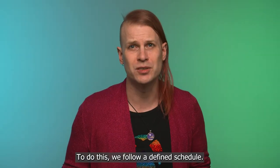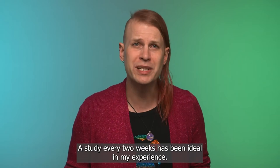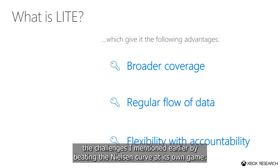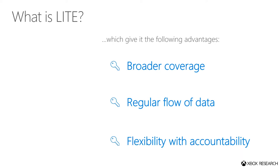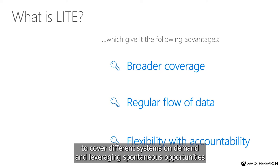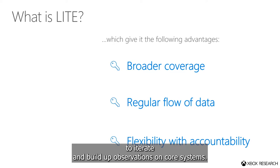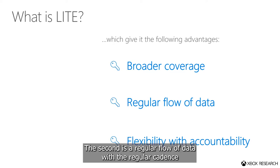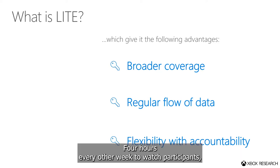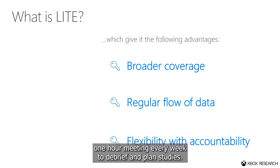To do this, we follow a defined schedule. A study every two weeks has been ideal in my experience. That gives LIGHT the following advantages, which we can leverage to overcome the challenges I mentioned earlier by beating the Nielsen curve at its own game. The first is we can get broader coverage by maximizing our ability to cover different systems on demand and leveraging spontaneous opportunities to iterate and build up observations on core systems. The second is a regular flow of data. With the regular cadence and a standardized schedule, it's easier to fit onto chaotic calendars — four hours every other week to watch participants, one hour meeting every week to debrief and plan studies.